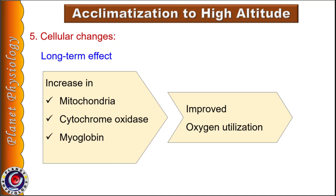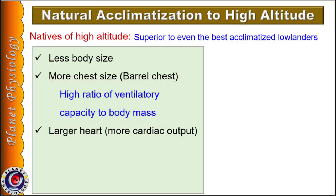Till now we have studied the various adaptive changes seen in a person who ascends slowly to high altitudes and continues to stay there for long duration. Now let us study the acclimatization process seen in permanent residents of high altitudes — natural acclimatization. Natives of high altitudes usually have short stature with higher chest size, with a barrel-shaped chest where the cross-section appears circular instead of elliptical.